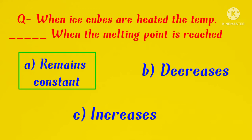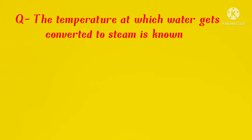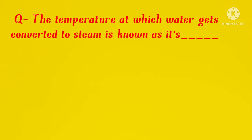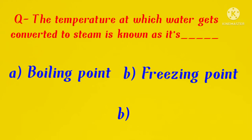Our next and final question is: the temperature at which water gets converted to steam is known as its blank. The options here are A) boiling point, B) freezing point, C) melting point. Here as we know, water is converting into steam, so water is a liquid and steam is a gaseous form.